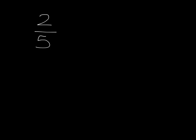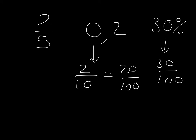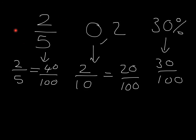One final example: which is the biggest out of two-fifths, 0.2, or 30 percent? The easiest way is to put them all into the same form — as fractions over a hundred. 30 percent is 30 over a hundred. 0.2 is two over ten, which becomes 20 over a hundred. Two-fifths: multiplying five by 20 gives a hundred, so two times 20 gives 40 over a hundred. It's obvious that two-fifths is the biggest because it's 40 over a hundred, compared to 30 over a hundred and 20 over a hundred.